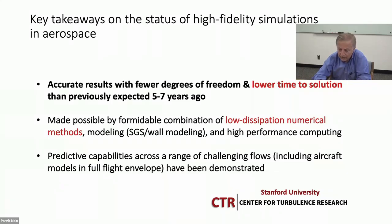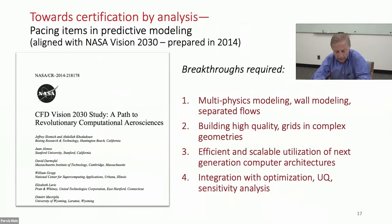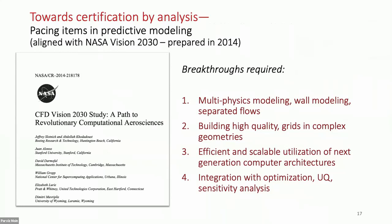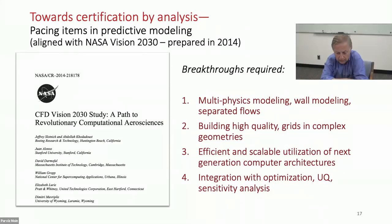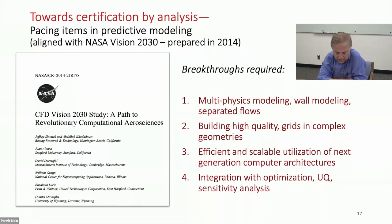I want to refer to a report that came out of NASA, prepared about seven years ago, about the pacing items in predictive modeling based on the Vision 2030 report. They pointed out that if one wants to move toward certification of aircraft by analysis, certain breakthroughs were required. I think many of them — multi-physics modeling, wall modeling in separated flows, building high-quality grids in complex geometries, and efficient and scalable utilization of next-generation computer architectures — have already been realized.